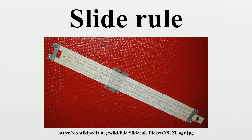Most slide rules consist of three linear strips of the same length, aligned in parallel and interlocked, so that the central strip can be moved lengthwise relative to the other two. The outer two strips are fixed so that their relative positions do not change. Some slide rules have scales on both sides of the rule and slide strip, others on one side of the outer strips and both sides of the slide strip, still others on one side only. A sliding cursor with a vertical alignment line is used to find corresponding points on scales that are not adjacent to each other, or in duplex models, on the other side of the rule. The cursor can also record an intermediate result on any of the scales.